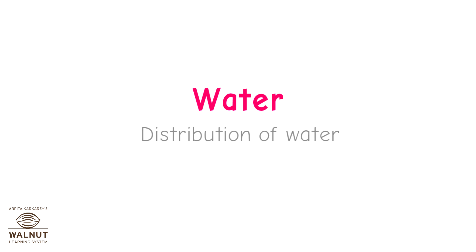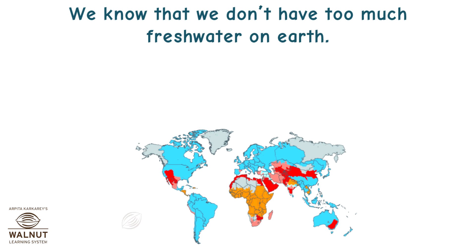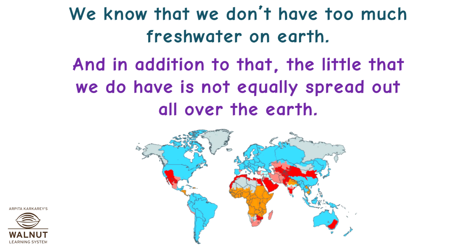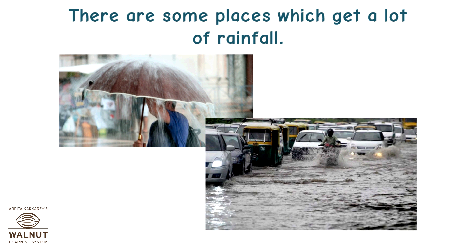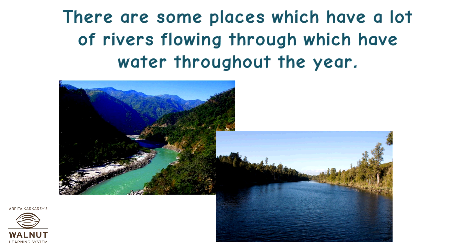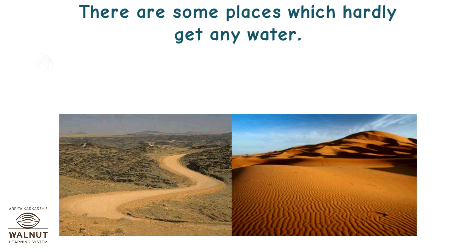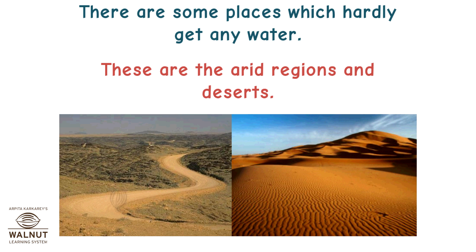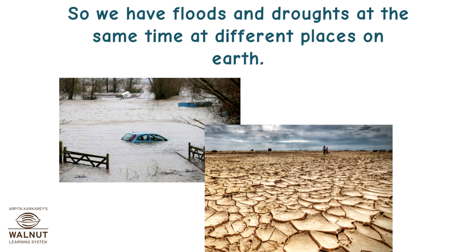Let's look at the distribution of water. We know that we don't have too much fresh water on earth, and in addition to that, the little that we do have is not equally spread out all over the earth. There are some places which get a lot of rainfall, some which have rivers flowing through year-round, and some which hardly get any water — these are the arid regions and deserts. So we have floods and droughts at the same time at different places on earth.